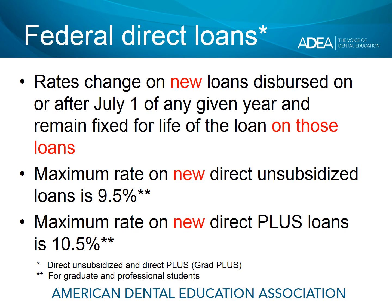Note that the maximum rate on new direct unsubsidized loans is 9.5%, and the maximum rate on new direct plus loans is 10.5%. The interest rate on direct plus loans is always a full point higher than on direct unsubsidized loans. Your key takeaway here is that the rate changes on new loans every July 1.